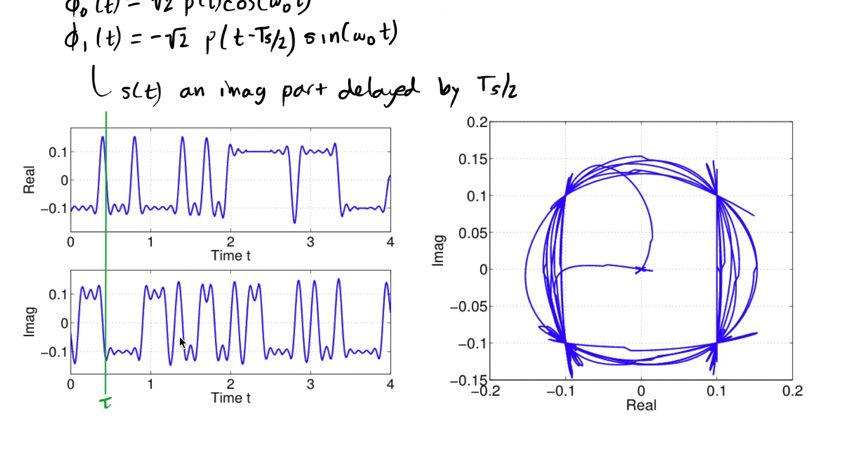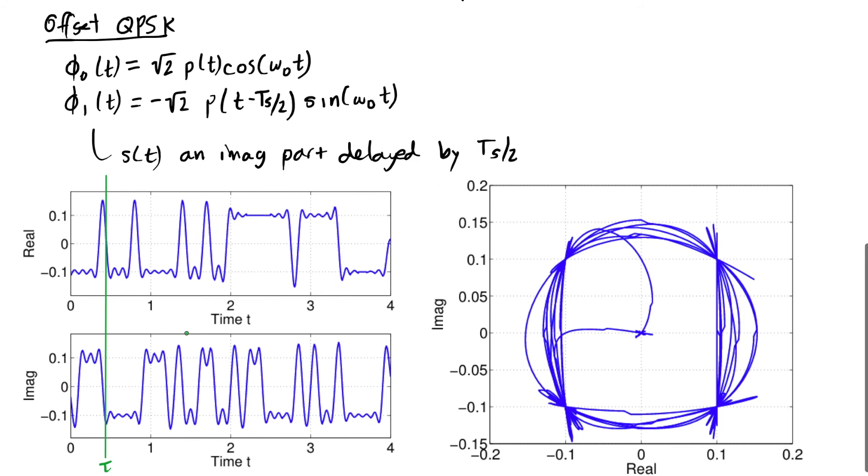Let's look at what happens to the time plot for offset QPSK. So in offset QPSK, I have shifted the imaginary part of the signal by T_s/2. This is the same data that I sent in the QPSK example, except that the imaginary part is shifted.